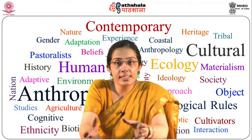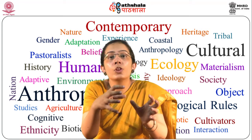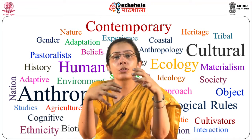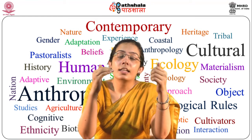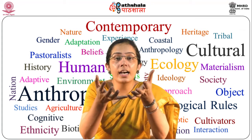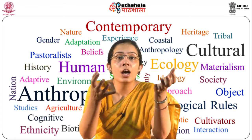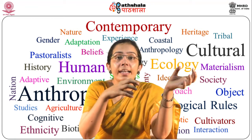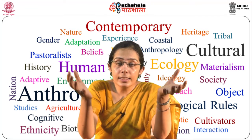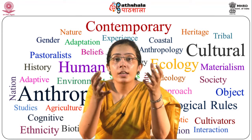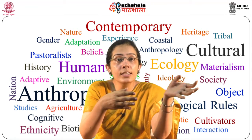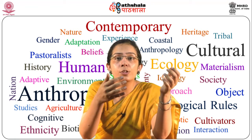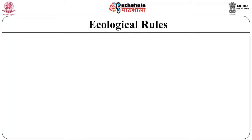The next level is ecosystem — a community of organisms living in conjunction with non-living components of a particular environment, which include air, water, and soil, interacting as a system. Another level is biomes — large naturally occurring communities of flora and fauna occupying a major habitat and adapting to their environment. The highest level is the biosphere, where all living things on earth live. The biosphere is the biological component of earth's system and includes the lithosphere, hydrosphere, and atmosphere.